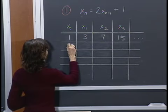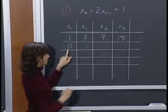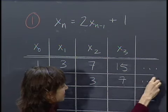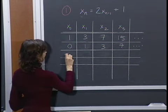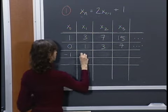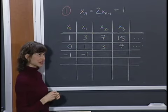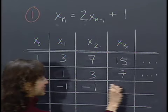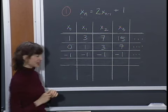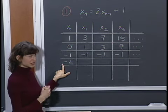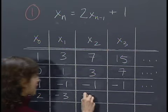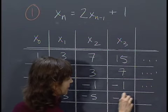Let's try x0 = -1. Well, 2×(-1) = -2, add 1 gives -1 back again. Apply the difference equation again: 2×(-1)+1 = -1. So this trajectory will always stay the same — if we start with -1, we always get -1. Now let's try x0 = -2: 2×(-2)+1 = -3, 2×(-3)+1 = -5, 2×(-5)+1 = -9, and so on.